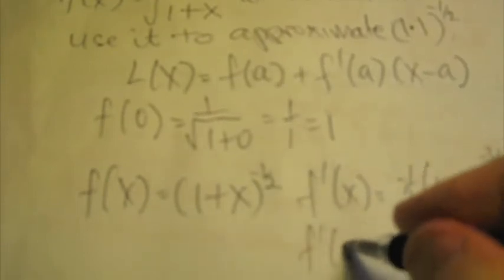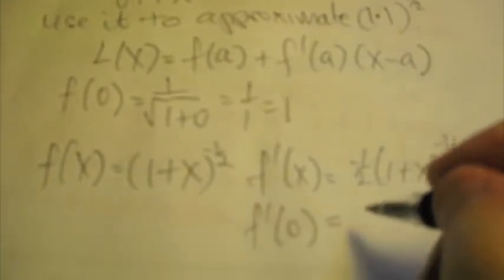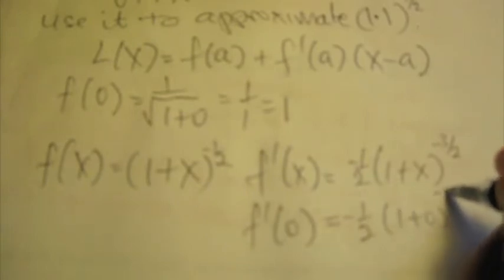And so f'(0) is going to be equal to -1/2 by (1 + 0)^(-3/2), which is -1/2.